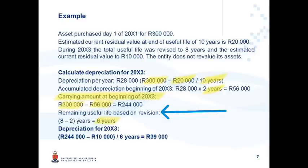To calculate depreciation for 20X3: take the carrying amount at the beginning of the year, 244,000 rand, deduct the new estimated residual value of 10,000 rand, and depreciate that amount over the new remaining useful life of six years. The depreciation for 20X3 is therefore 39,000 rand.